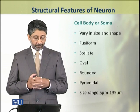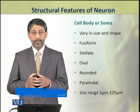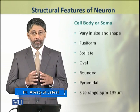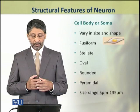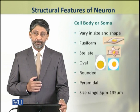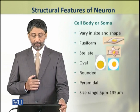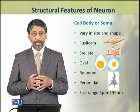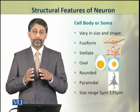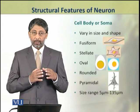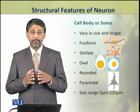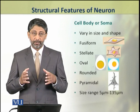The cell body or soma varies in size and shape in different neurons. It may be fusiform, stellate, or oval, and may be rounded in some neurons. Some neurons also have pyramidal shaped cell bodies. The size range of the cell body is from 5 micrometers in small neurons up to 135 micrometers in larger neurons.